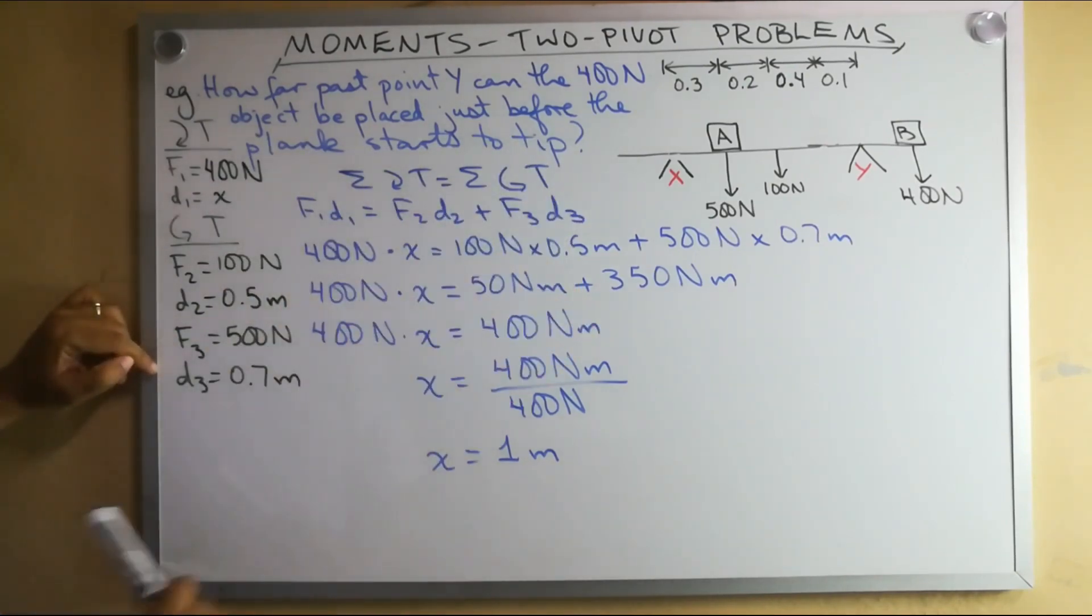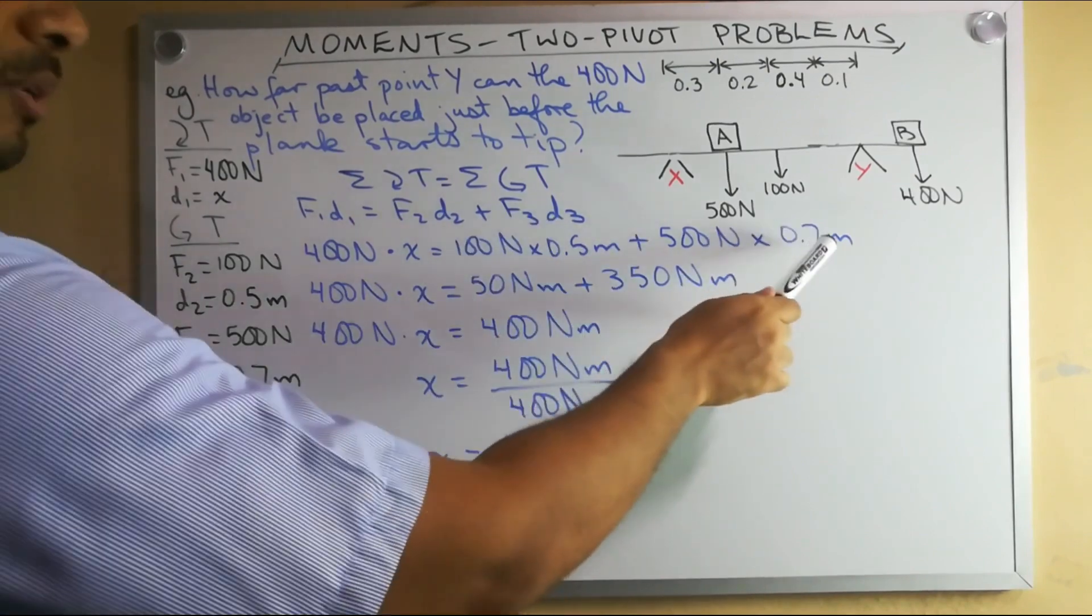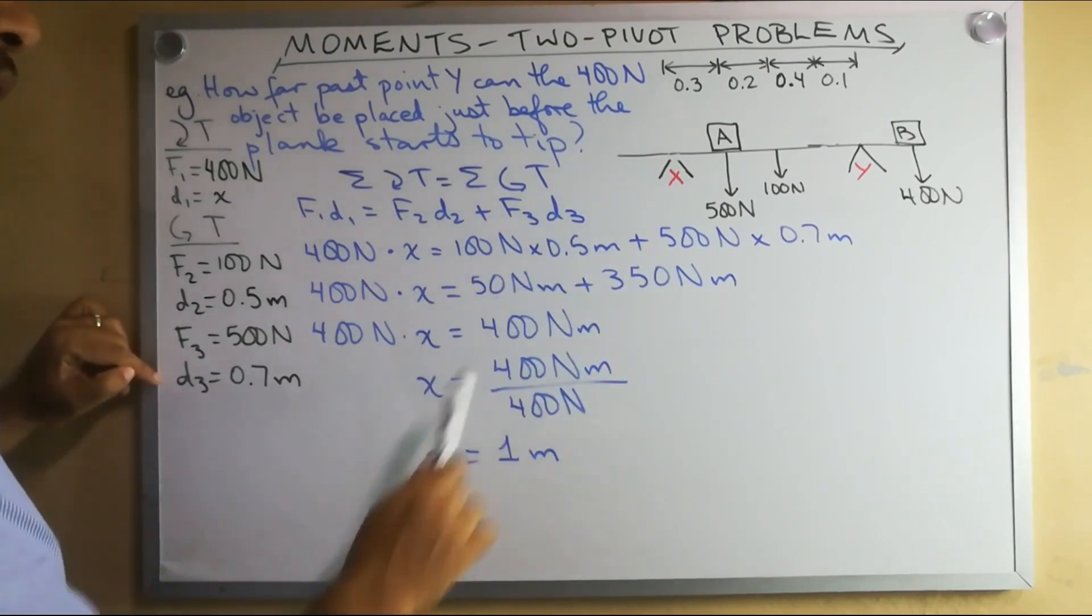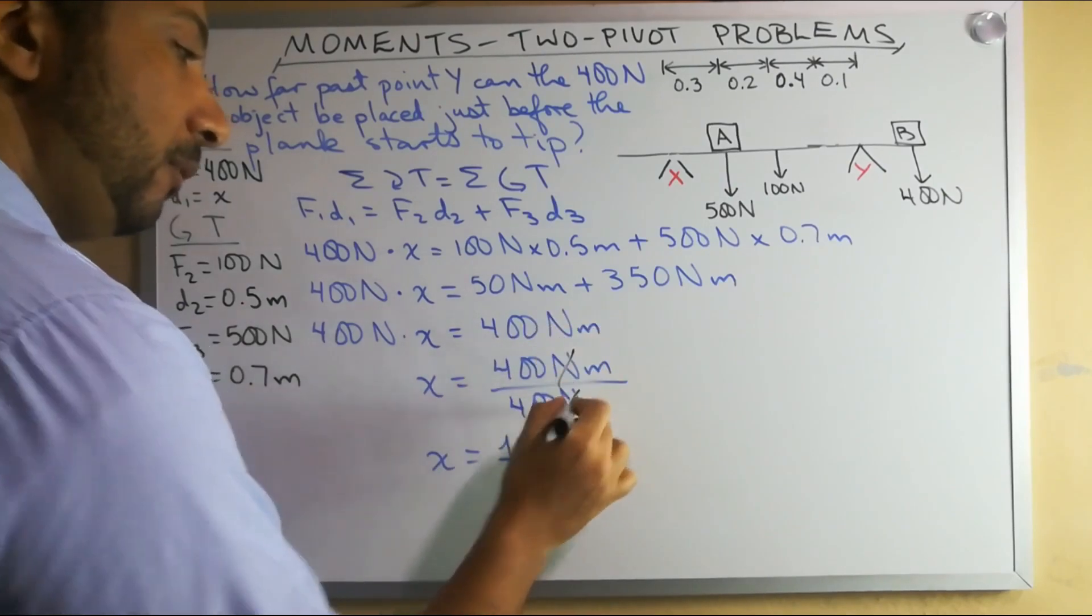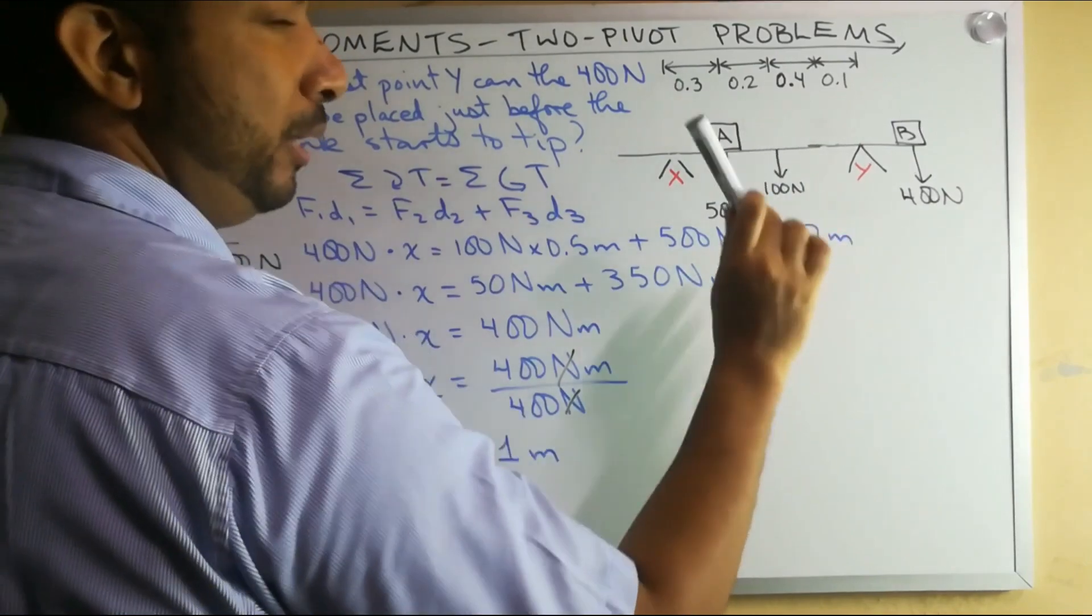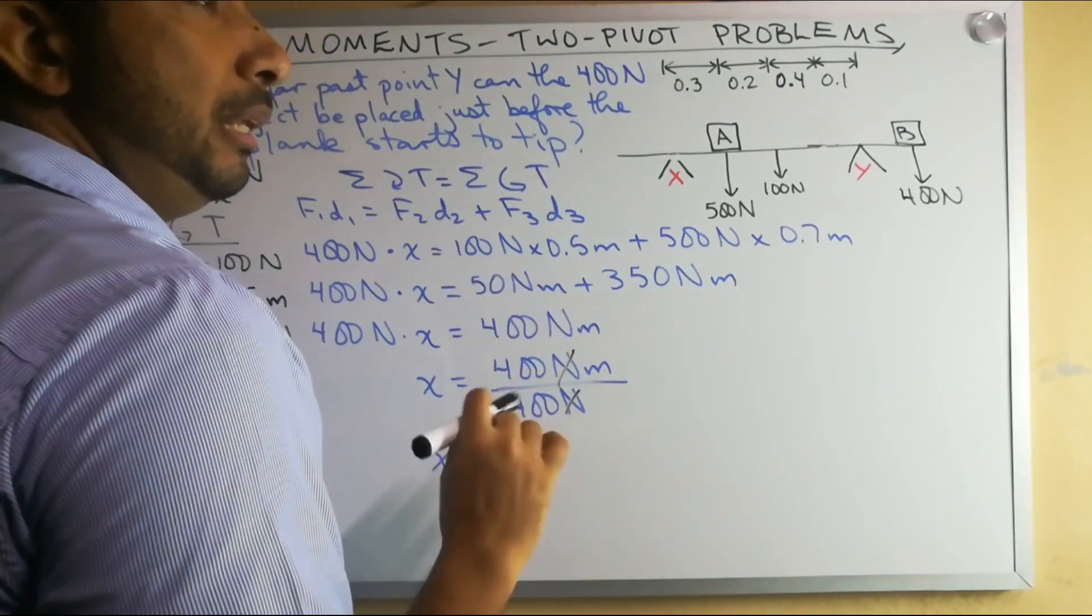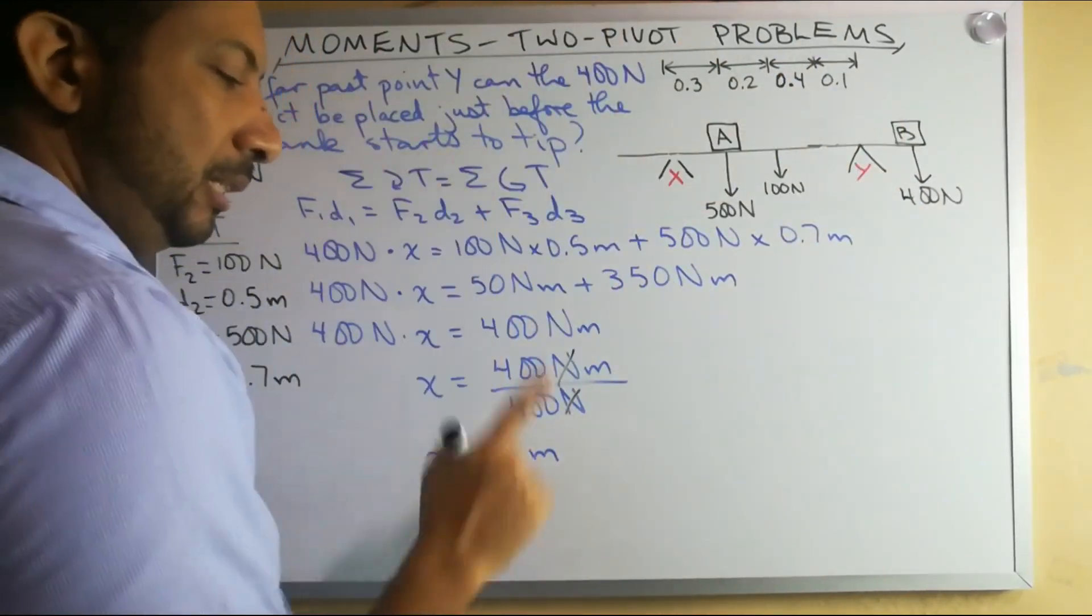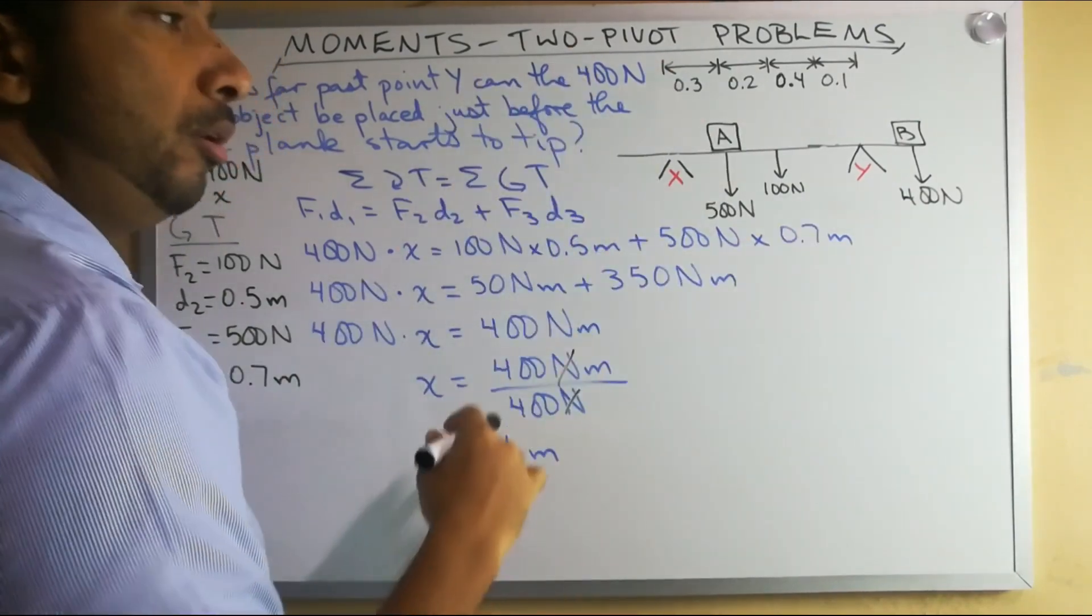So clockwise, we have the first force of 400 Newtons and its distance is unknown, X. Anticlockwise, 100 Newtons is 0.5 meters away. The third force, 500 Newtons is 0.7 meters away. So we write our formula, we substitute and we work it out. 100 times 0.5 is 50, so that is 50 Newton meters. 500 times 0.7 is 350, so that's 350 Newton meters. 50 plus 350 gives us 400 Newton meters. We transpose this 400 Newtons and when we divide by that, the Newtons cancel out and I am left with 1 meter. So that means I can take object B and put it as far up to 1 meter away on the right-hand side of pivot Y and it will be in balance. The instant I put it right at 1 meter or anything further, then it will tip over. This is the limit. Anything less than 1 meter and it will still balance. Right at 1 meter mark or anything more, then it will tip over.